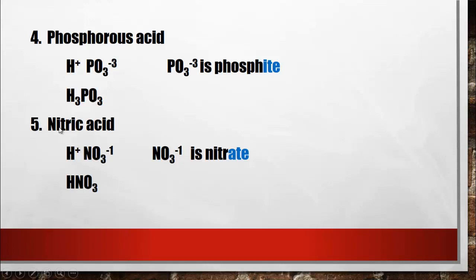Lastly, nitric acid contains nitrogen and oxygen. Since it ends with '-ic acid,' the polyatomic anion is nitrate, which has the formula NO3-1. When we combine it with hydrogen, since the charges are equal, there is no need for the crisscross process. The final formula for nitric acid is HNO3.